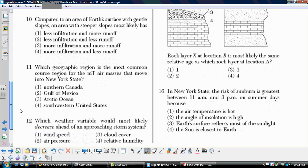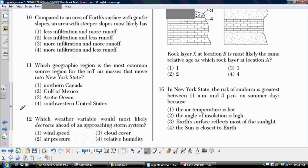Number ten. Compared to an area of Earth's surface with gentle slopes, an area with steeper slopes most likely has. Looking at the answer choices, we're talking about infiltration, the rate at which water is going to be able to sink into the ground, and runoff. Remember, if it's running off, that means it didn't sink in. An area with steeper slopes, if the gradient is high, then the water is going to be moving faster, and so you would have less infiltration. So we know it's got to be either one or two. And if there's less infiltration, that means there's less sinking in, so there would be more that was running off. So number one, less infiltration and more runoff.